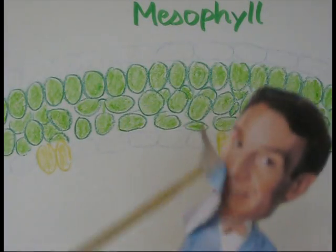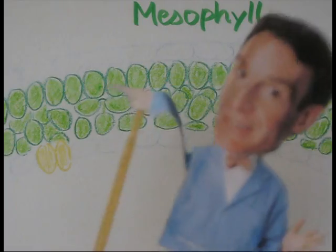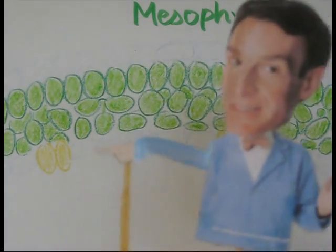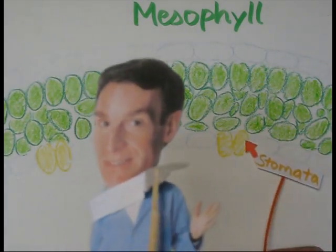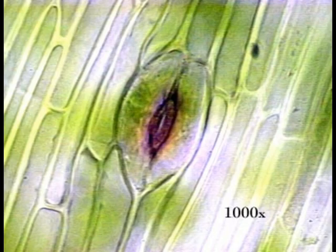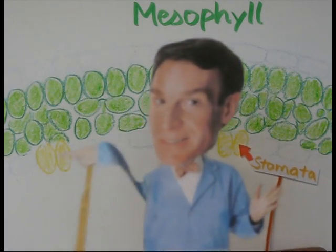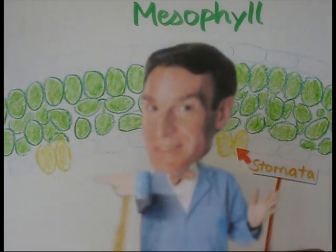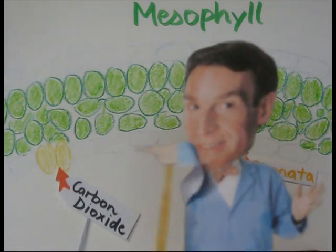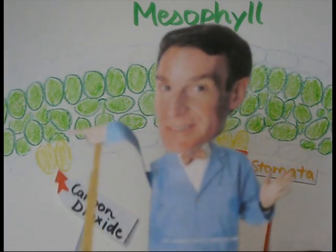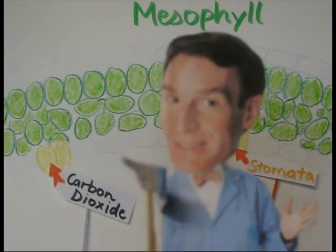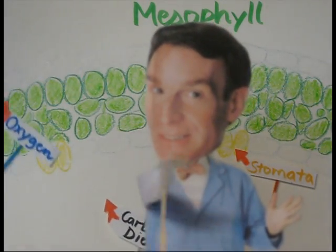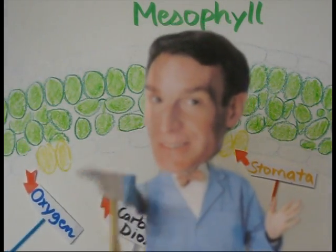Next, we are at the mesophyll, which is the interior of the leaf. This is the stomata. Here, carbon dioxide is absorbed into the leaf, and oxygen is released into the air for you to breathe!